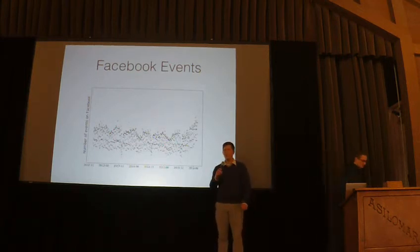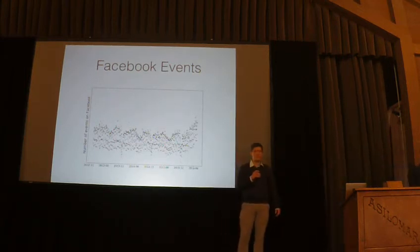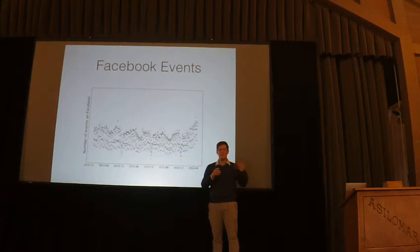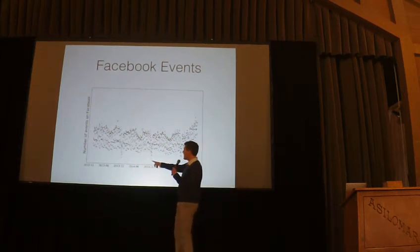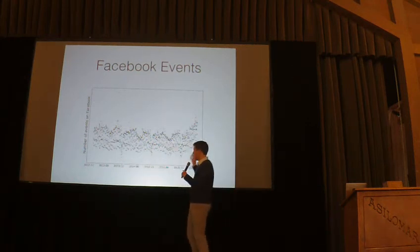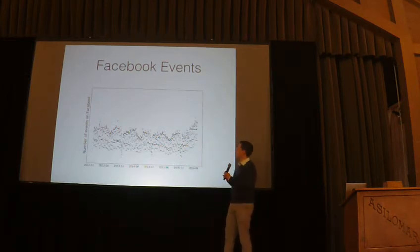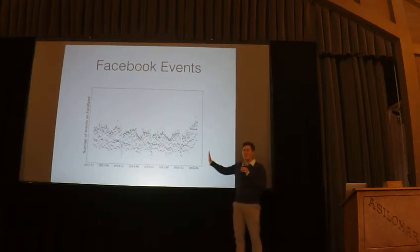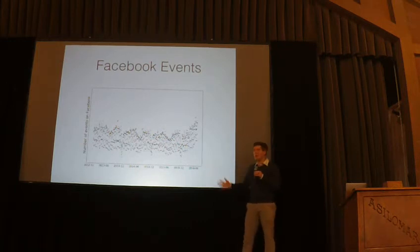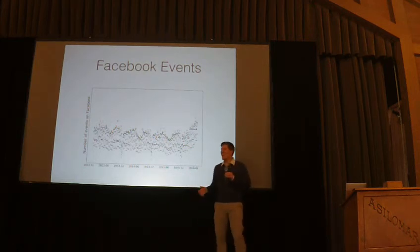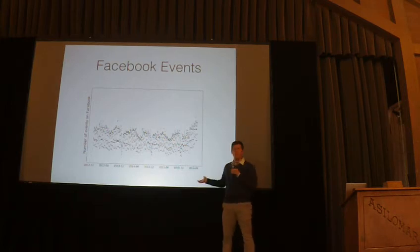Now Ben's going to come up and talk about the nuts and bolts of how Prophet actually works. I wanted to start by showing an example of the type of time series we wanted to use Prophet to forecast. This is the number of Facebook events — a platform where you can create events and share them and invite friends. Each dot here is the number of events created on one day, and we have three and a half years of data here.